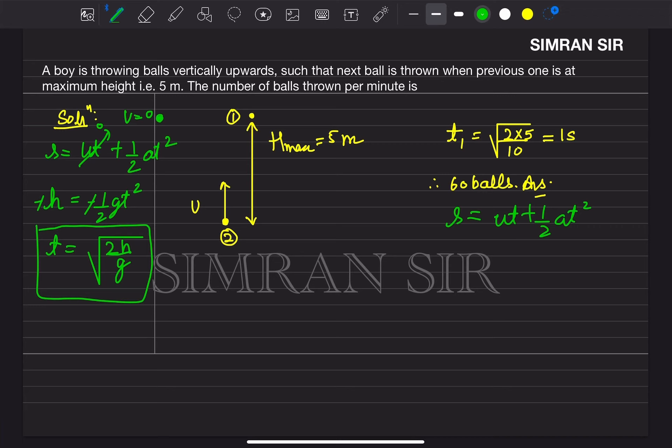So the time to go up to height H is root 2H by G. For H equals 5 meters, we calculate the time.